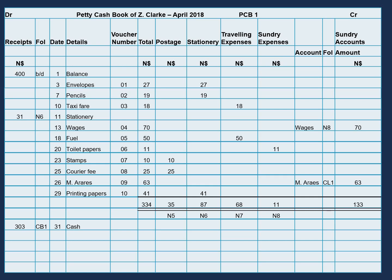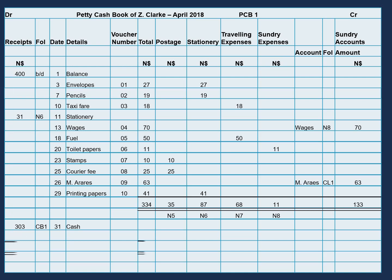So now let's add up the total of our receipts column. When we do that, we get $734. Now we need to get our closing balance for April 2018.